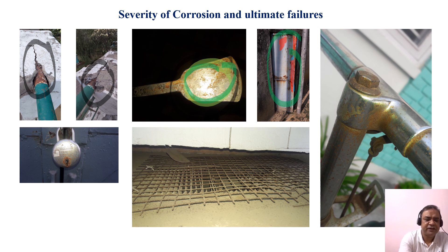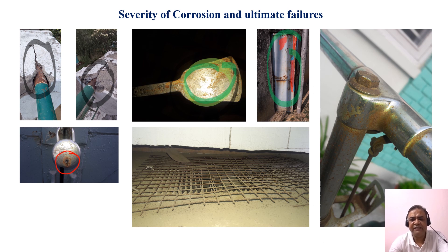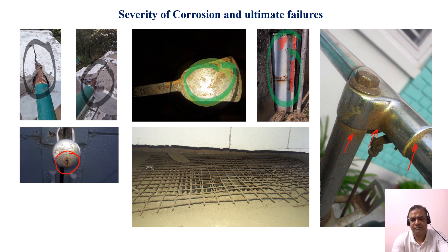We have another corrosion event experienced in iron locks. If you see the part where the key is inserted, that is also a crevice, and that's why it experiences more corrosion compared to the other parts of the lock. Similarly, on a bicycle handle, if you see the crevice sections and the bent portions, wherever there is a crevice or a bend, we experience higher corrosion.